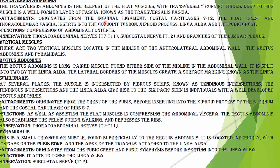Transversus abdominis is the deepest of the flat muscles with transversely running fibers. On its deep side there is a fascia called the transversalis fascia. The transversus abdominis muscle originates from the inguinal ligament and costal cartilages, and inserts into the xiphoid process and linea alba. Its function is compression of abdominal contents. Innervation is through thoracolumbar nerves, subcostal nerve, and lumbar plexus.